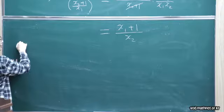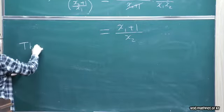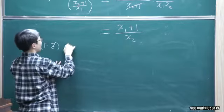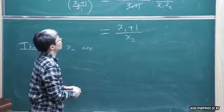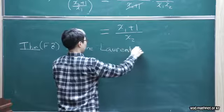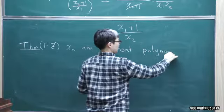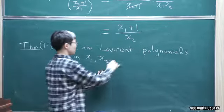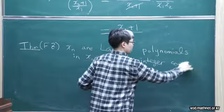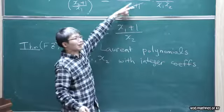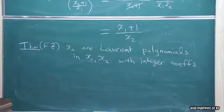Laurent polynomial. What's happening is, we have to express everything in terms of x1 and x2 only. And then they are rational functions, but actually Laurent polynomials in these two initial variables with integer coefficients. So this theorem guarantees such a cancellation happens for every mutation step.